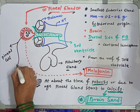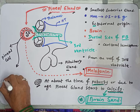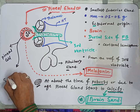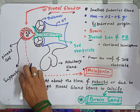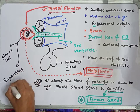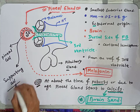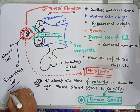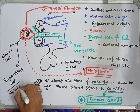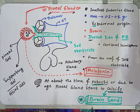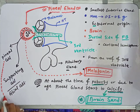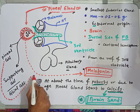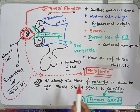There is another type of cell — supporting cells. The supporting cells are actually glial cells. The pineal cells are responsible for the production of melatonin — the hormone of the pineal gland.